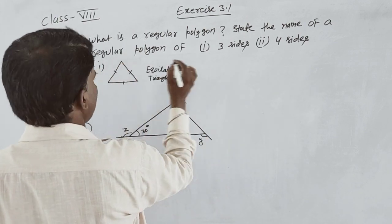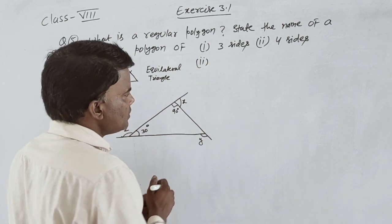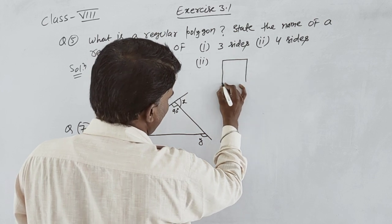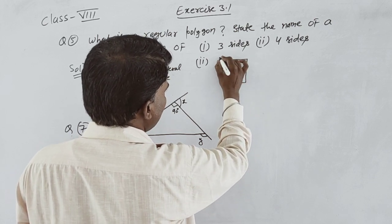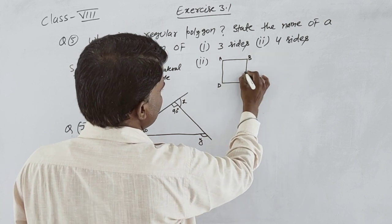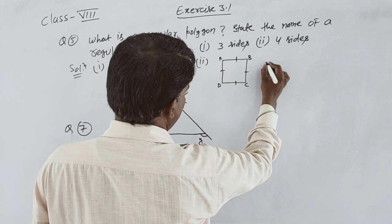For the second part, if four sides are equal, then we draw a square. So the four-sided regular polygon is a square.